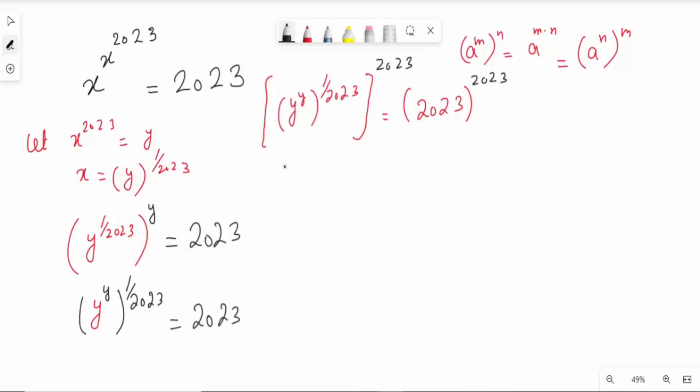Now, y raised to y, here 1 over 2023 multiply this 2023. Using this formula A raised to M, we have only y raised to y is equal to 2023 raised to 2023.